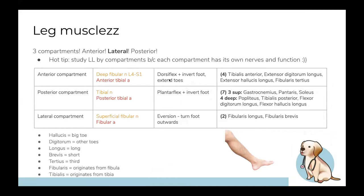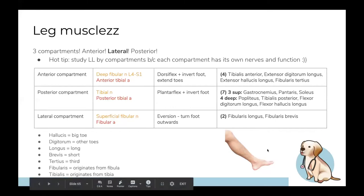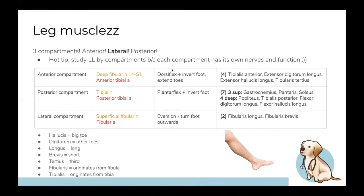The anterior compartment performs dorsiflexion — pointing your toes and foot up. The posterior compartment does plantar flexion. The lateral side does eversion. Remember this by doing it on your own foot — when you flex your foot up you can feel the anterior compartment of your shin tensing. Eversion is limited to the lateral compartment; the anterior and posterior compartments do inversion.